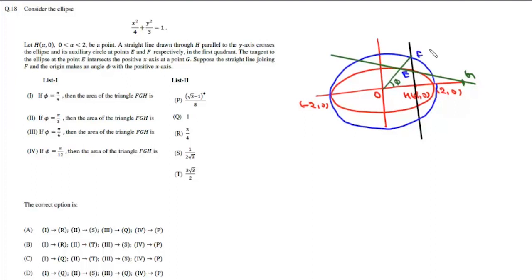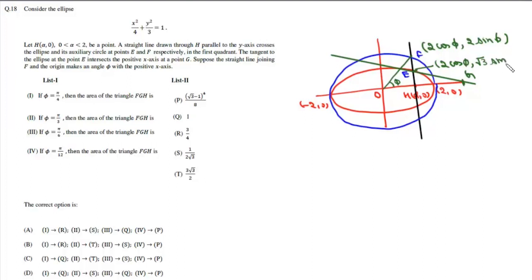Since φ is the eccentric angle, the coordinates of F are (2cosφ, 2sinφ). Correspondingly, the coordinates of E are (2cosφ, √3 sinφ), since b = √3. The coordinates of H are (2cosφ, 0).